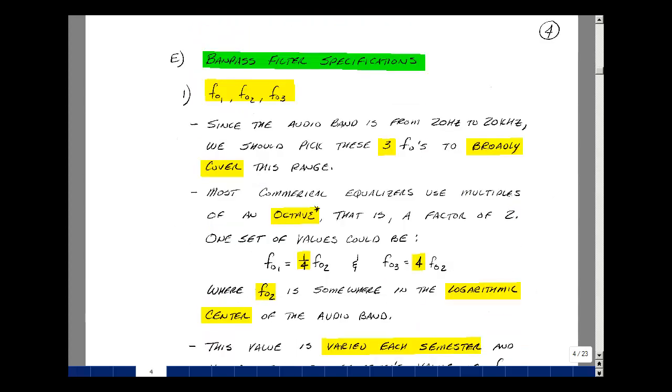Our next task is to specify the three center frequencies of our bandpass filters to broadly cover the audio band from 20 hertz to 20 kilohertz. Commercial equalizers do an octave spacing starting at 16 hertz, and it takes about 10 bandpass filters to cover the audio band. This is great coverage, but that's a lot of circuits to build. Let's pick F naught two to be roughly the logarithmic center of the audio band, and then let's go back two octaves for F naught one and forward two octaves for F naught three. That'll give us pretty good coverage if we have a wide bandpass filter.